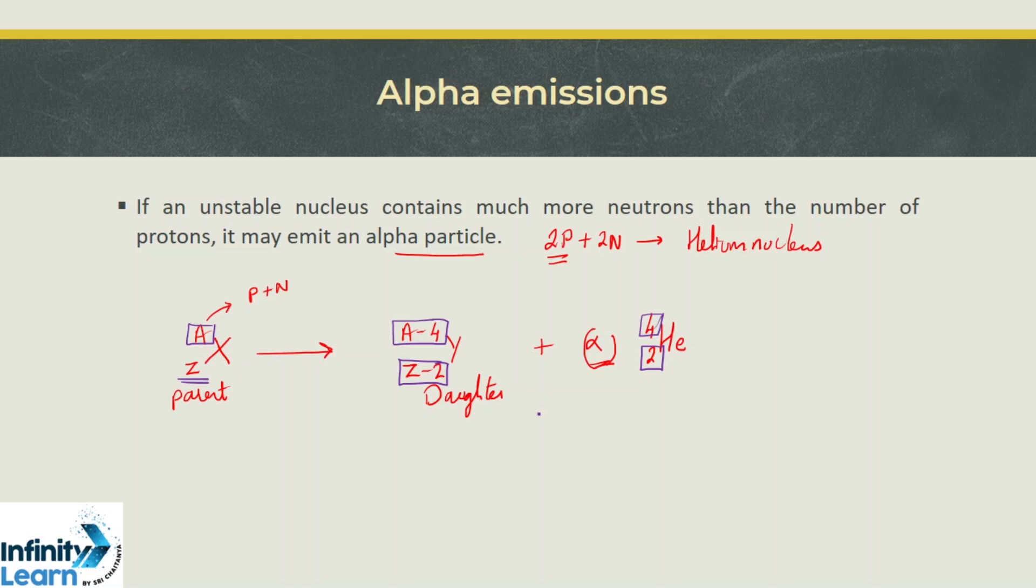Let us take an example. Radioactive uranium-238 undergoes alpha emission. After emission of a helium nucleus, we are left with thorium which has atomic number 90 and atomic mass number 234.